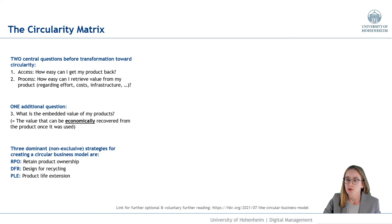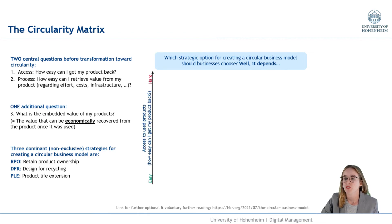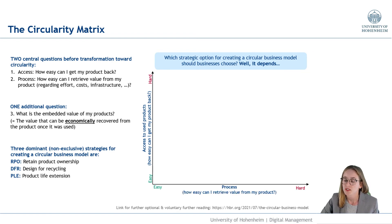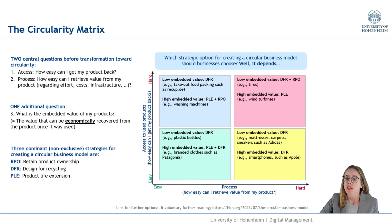The reason for building up the matrix is to help businesses decide which strategic option to use for creating a circular business model. On the y-axis we have the central question of how to get access to the product — how easy is it to get the products back. This can be easy or hard, and the strategy then depends on the embedded value.